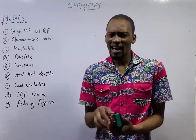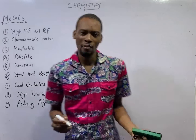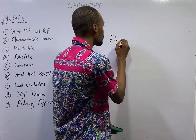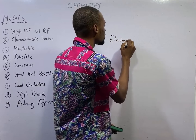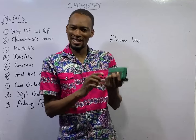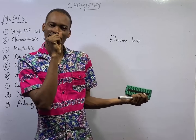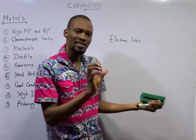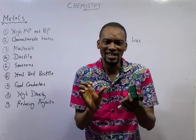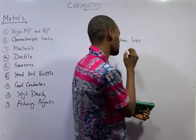Metals are elements that ionize by electron loss. Like I always say and like I will keep saying, chemistry is the study of the composition, properties, and uses of matter.